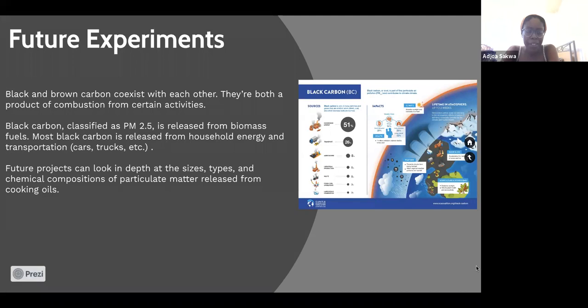Black carbon is classified as particulate matter 2.5 micrometers, which is pretty small. It can affect the lungs, the brain, and heart disease. It can affect heart disease as well as the environment when it evaporates into the air. It can increase climate change and melting of ice caps.